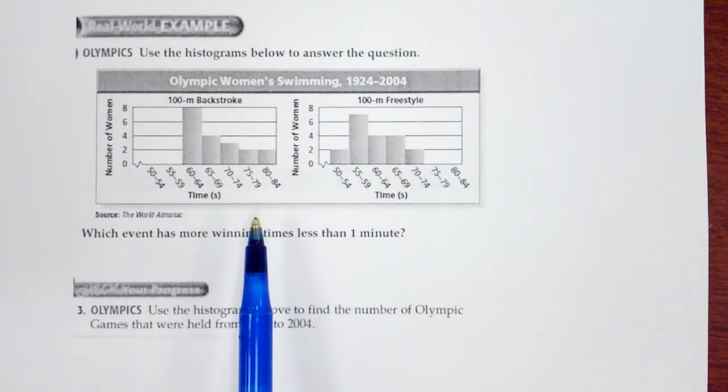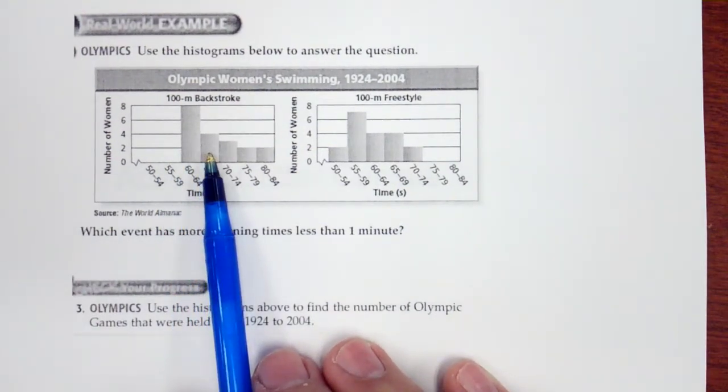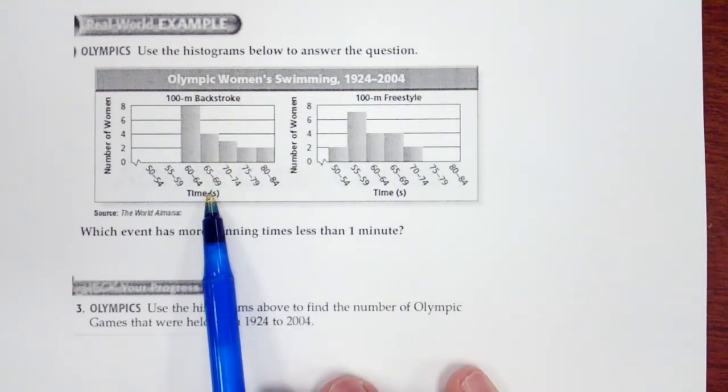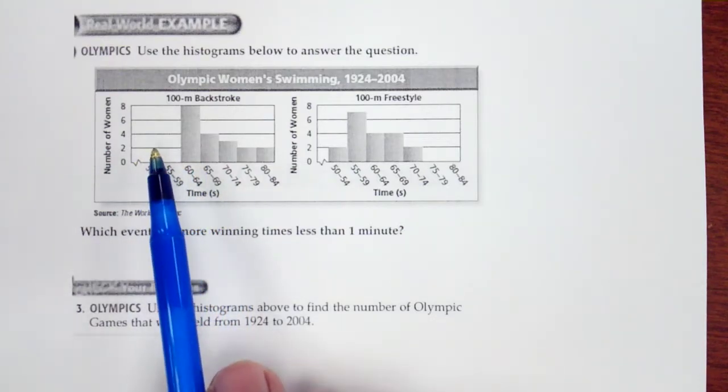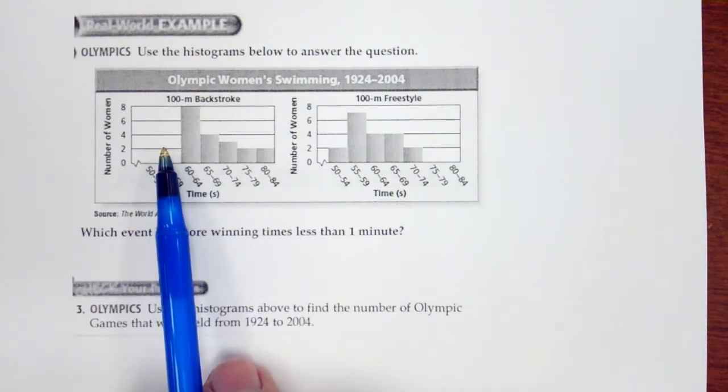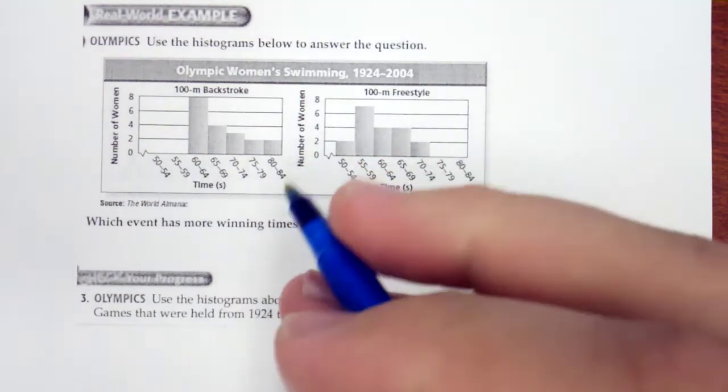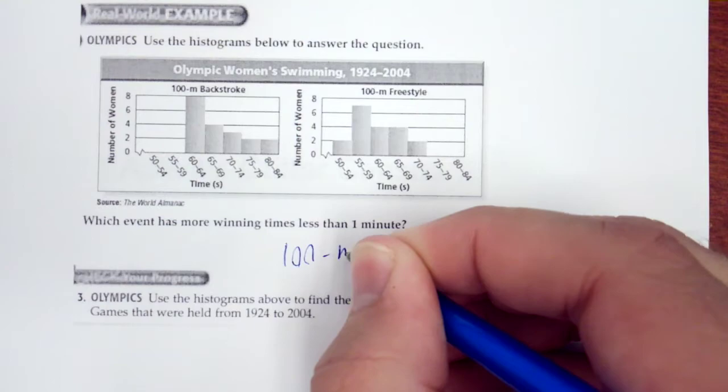Okay, so which event has more winning times less than a minute? So we're looking at less than a minute. So a minute is 60 seconds. So this is in time. So we have none. In the 100 meter backstroke, we have zero in the less than a minute. Whereas here we have all of these, these two bars in less than a minute. So this would be 100 meter freestyle.